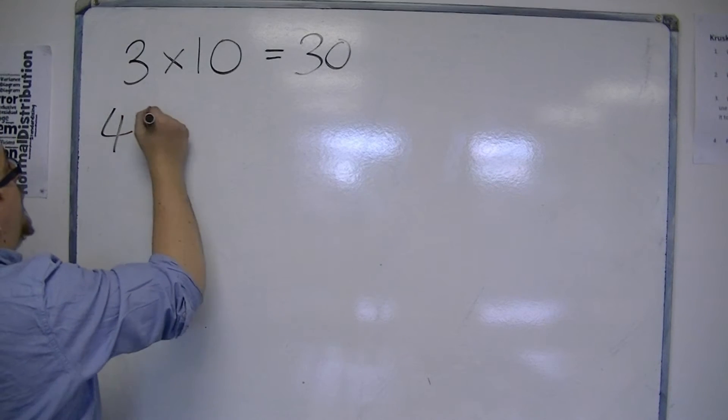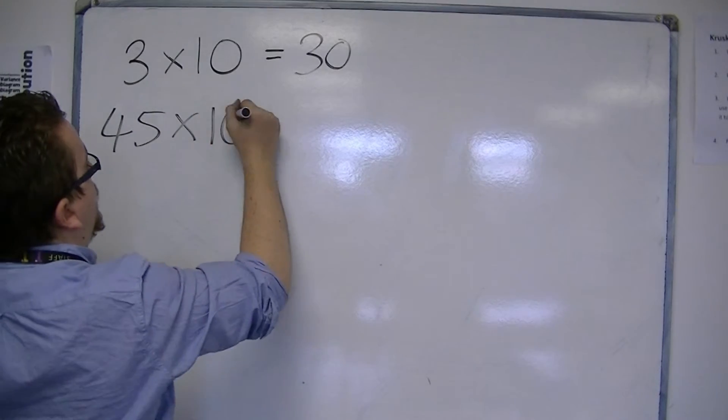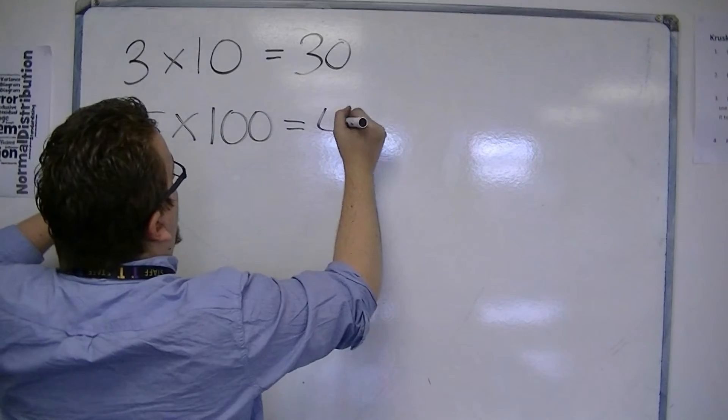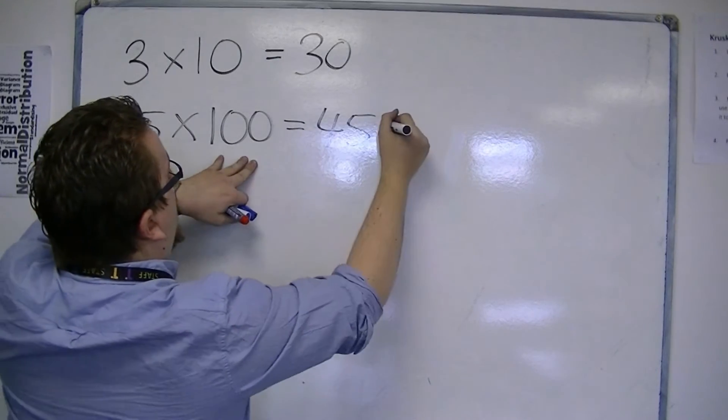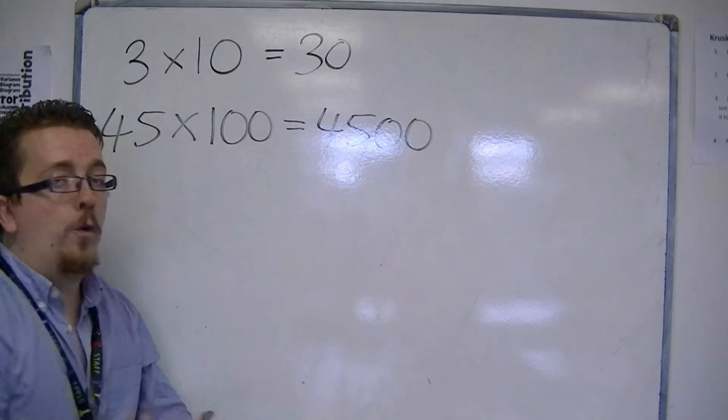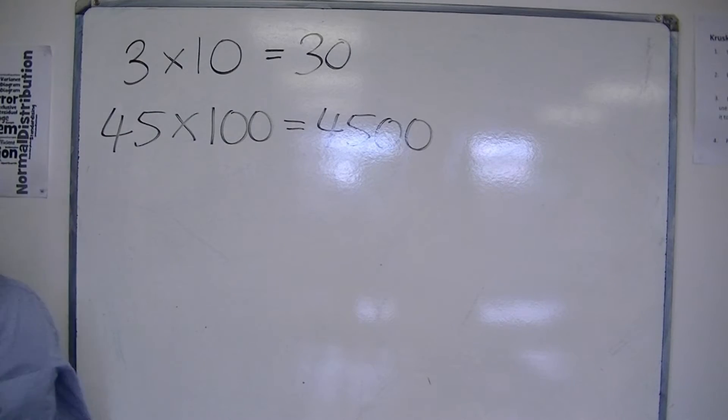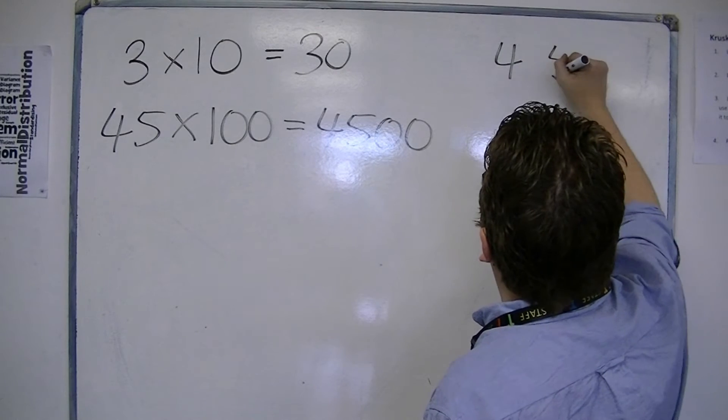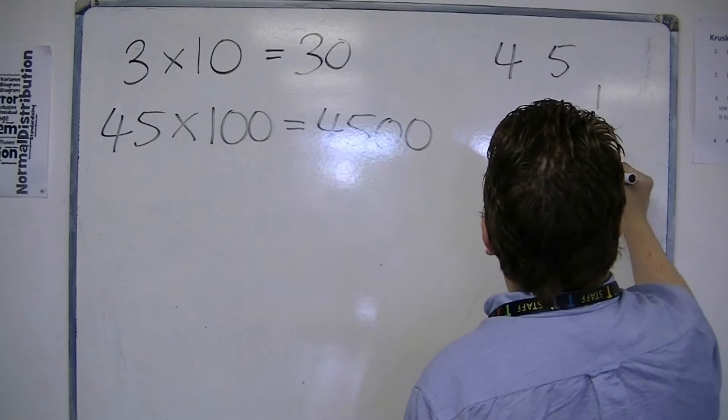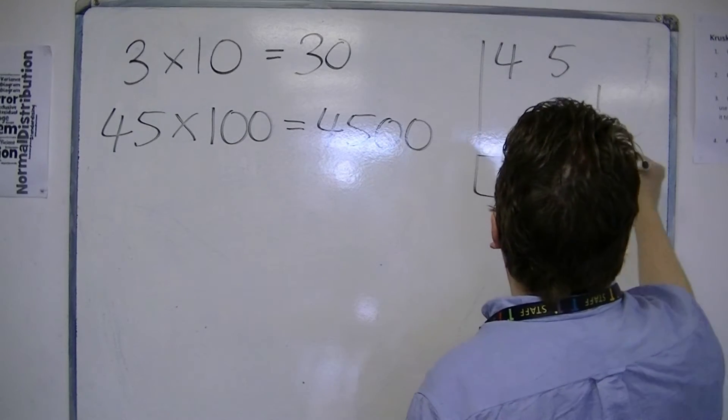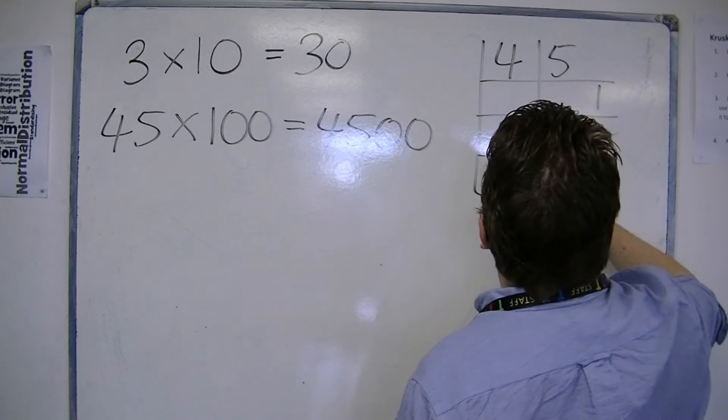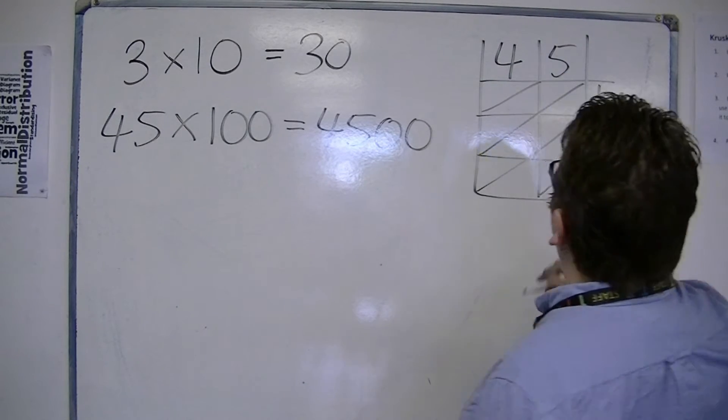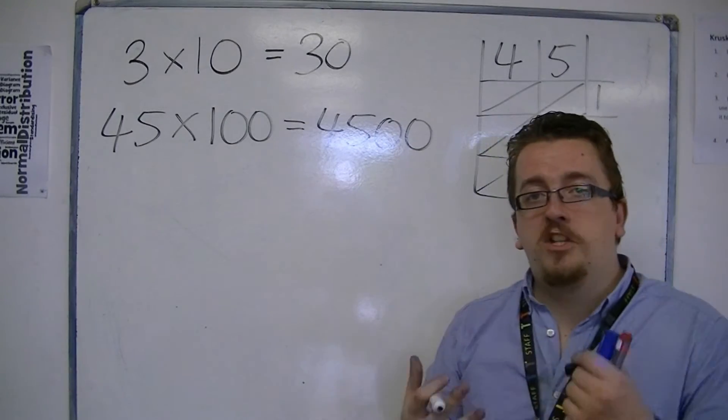You could also see this as 45 times 100. Then I've got the 45 and two zeros. So, 4500. You wouldn't write this out in the lattice method. Which I guess you could do, and you could show that you get the same answer. But this method's just going to be too long for you.